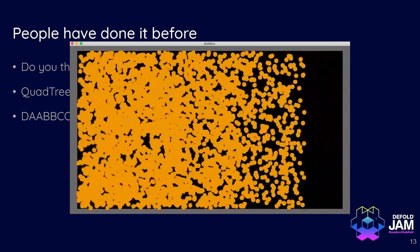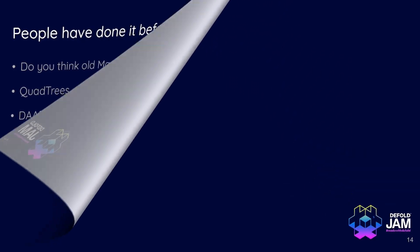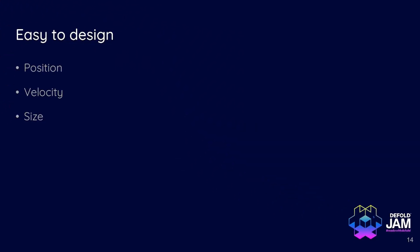For a platformer game, really all what you need in your physics body are just position vector, velocity vector, size. And we don't need mass, density, rotation, friction, restitution, angular momentum, all that stuff. We don't need that. It's so much simpler when we only deal with rectangular bodies without rotation. And it's really enough for most platformers, if you think about that.